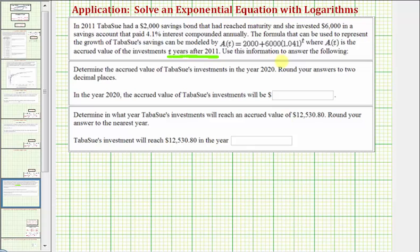We want to use the information to answer the following two questions. First, determine the accrued value of Tabasoo's investments in the year 2020. Round your answer to two decimal places. So the first step is to determine what value of T represents 2020.